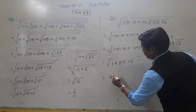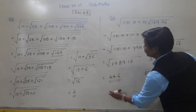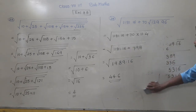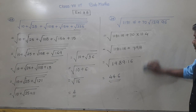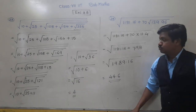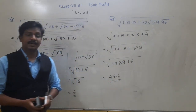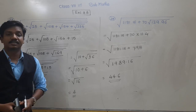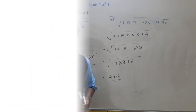Therefore, the square root of 1989.16 is 44.6. In this way we solve such higher-order expressions. I hope you have understood this. If you have any doubt, we can discuss during problem sessions. Thank you and have a good day.